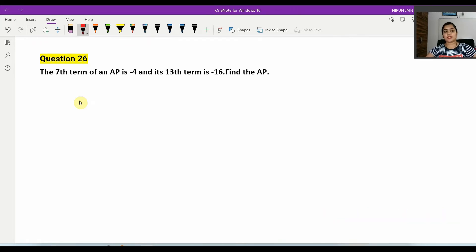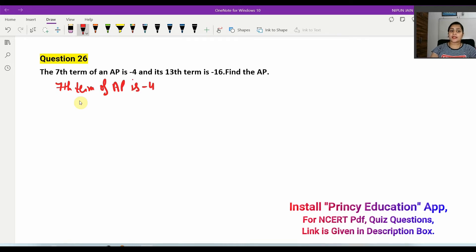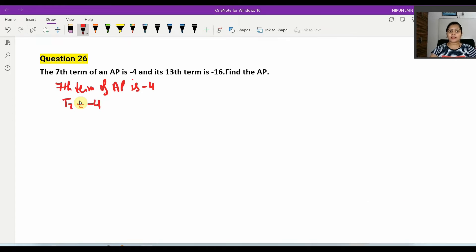You have to find the AP, the arithmetic progression sequence. We are given that the 7th term of an AP is minus 4, that means T7 equals minus 4. And the 13th term of AP is minus 16, that means T13 equals minus 16.